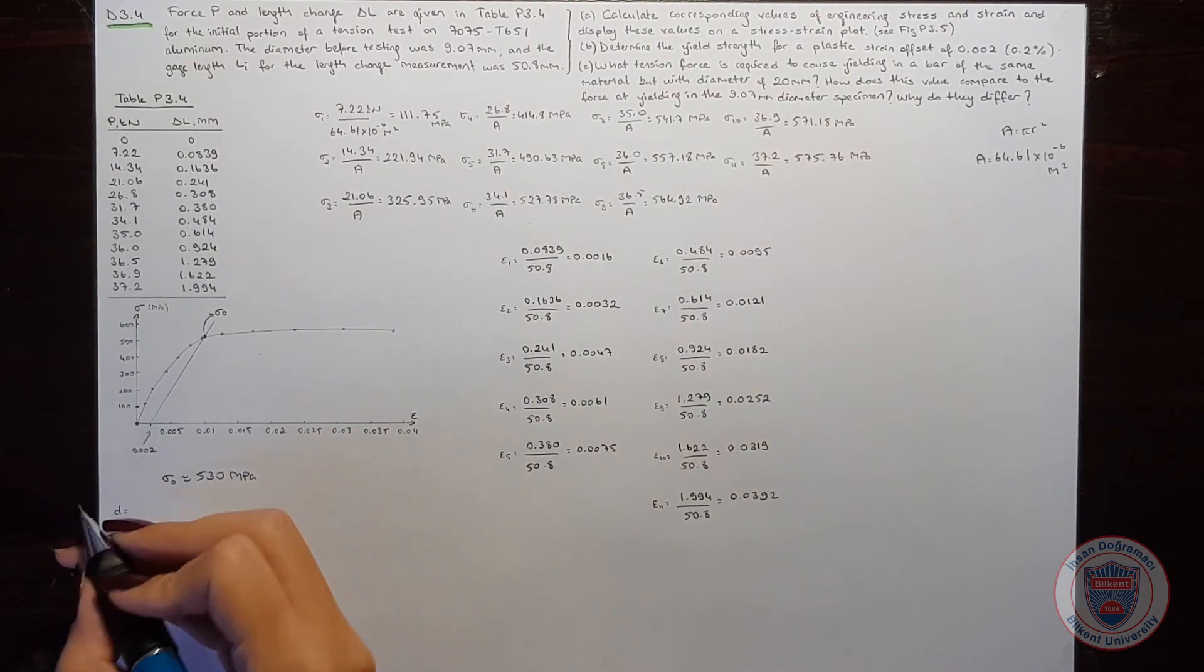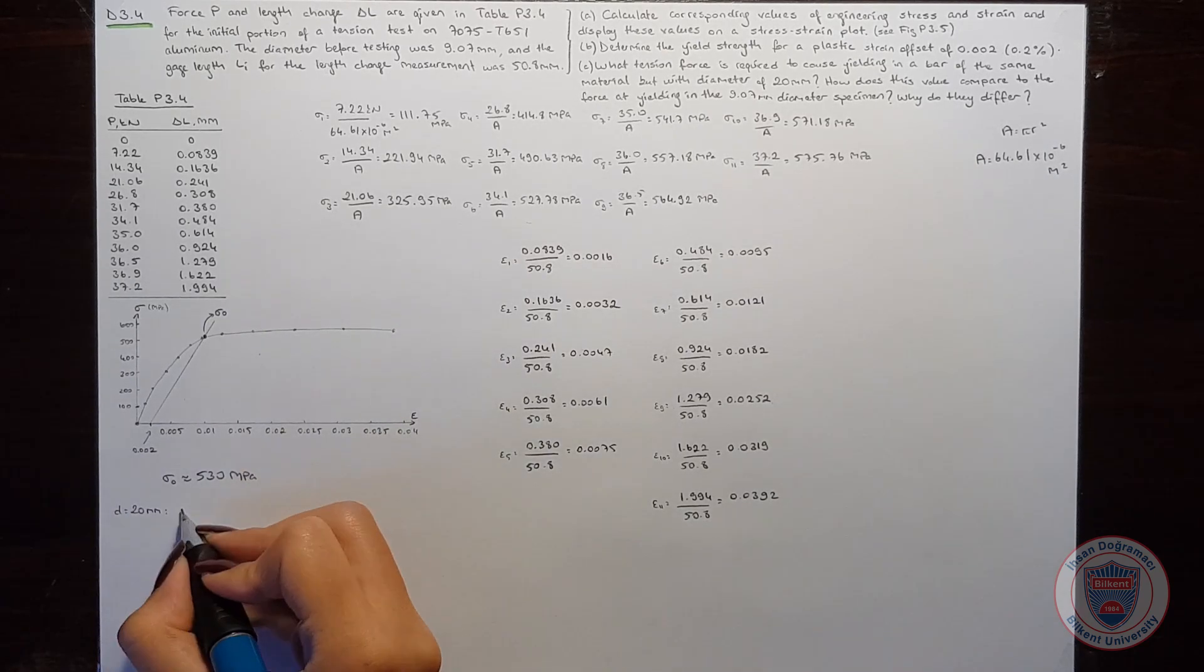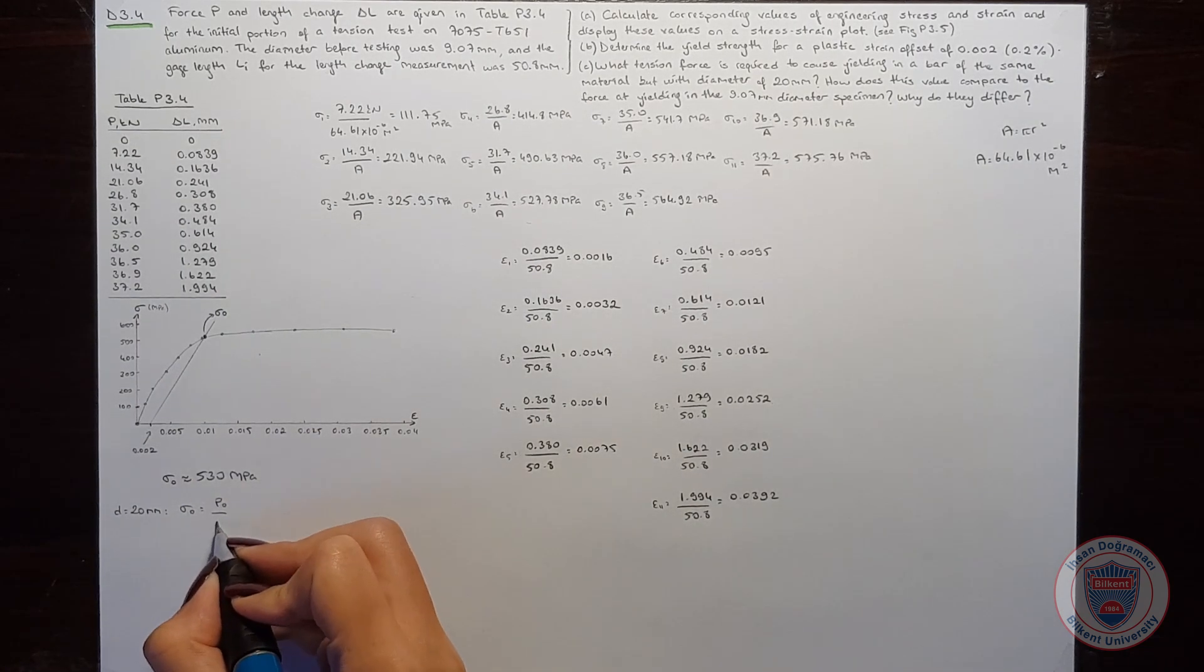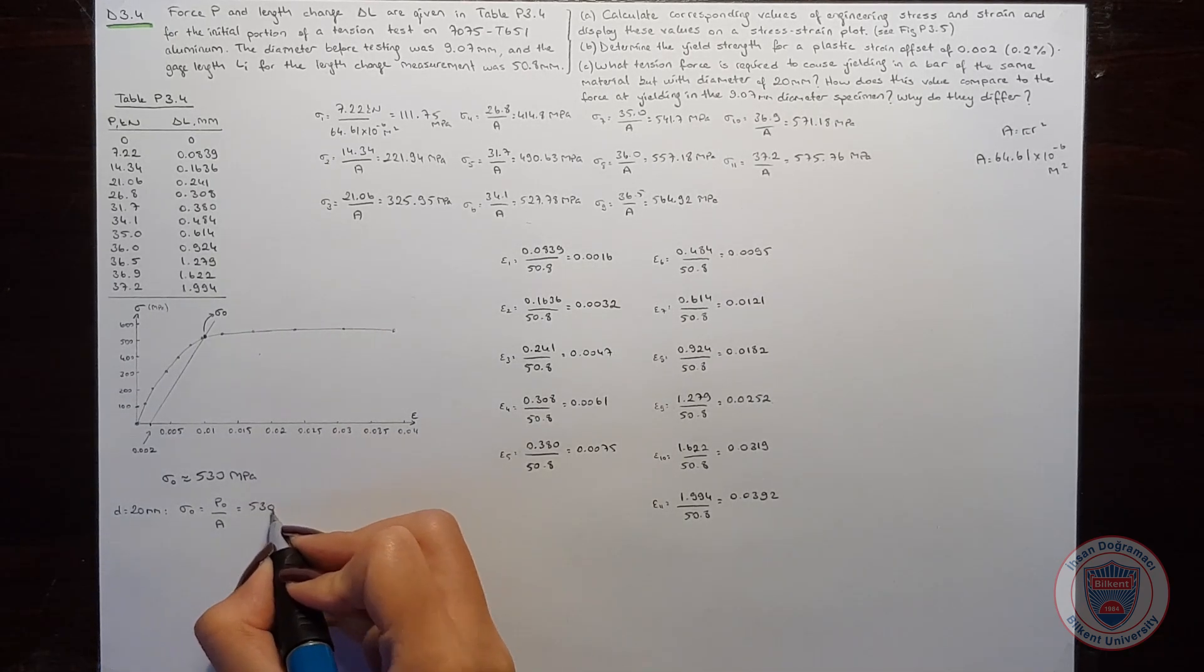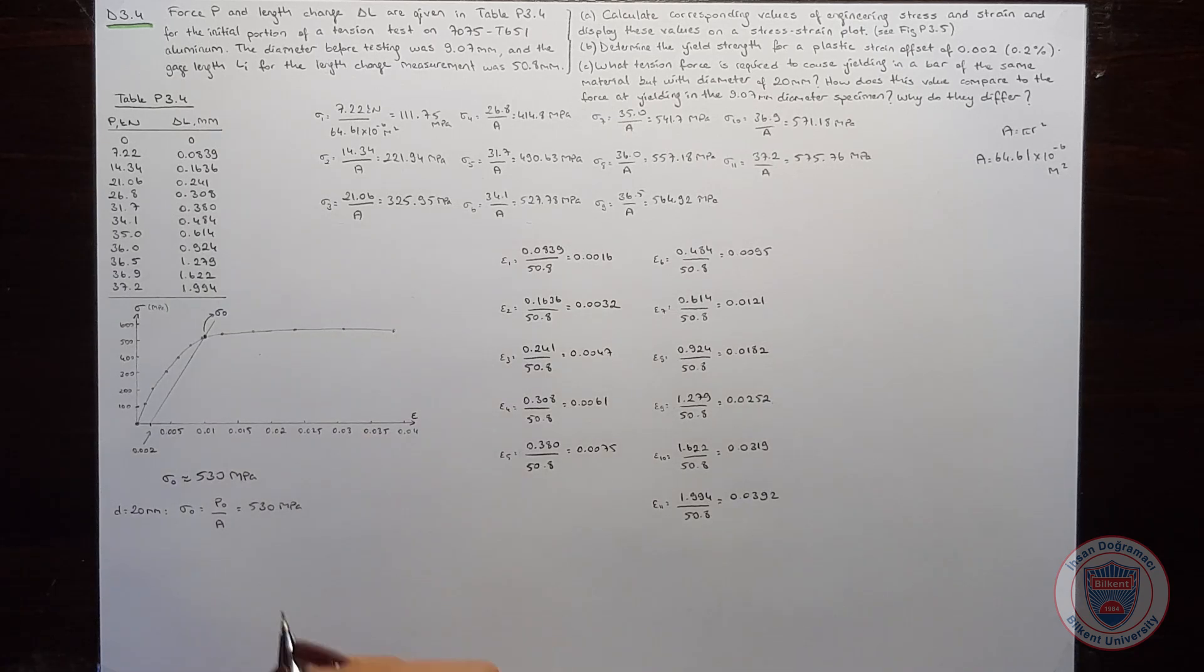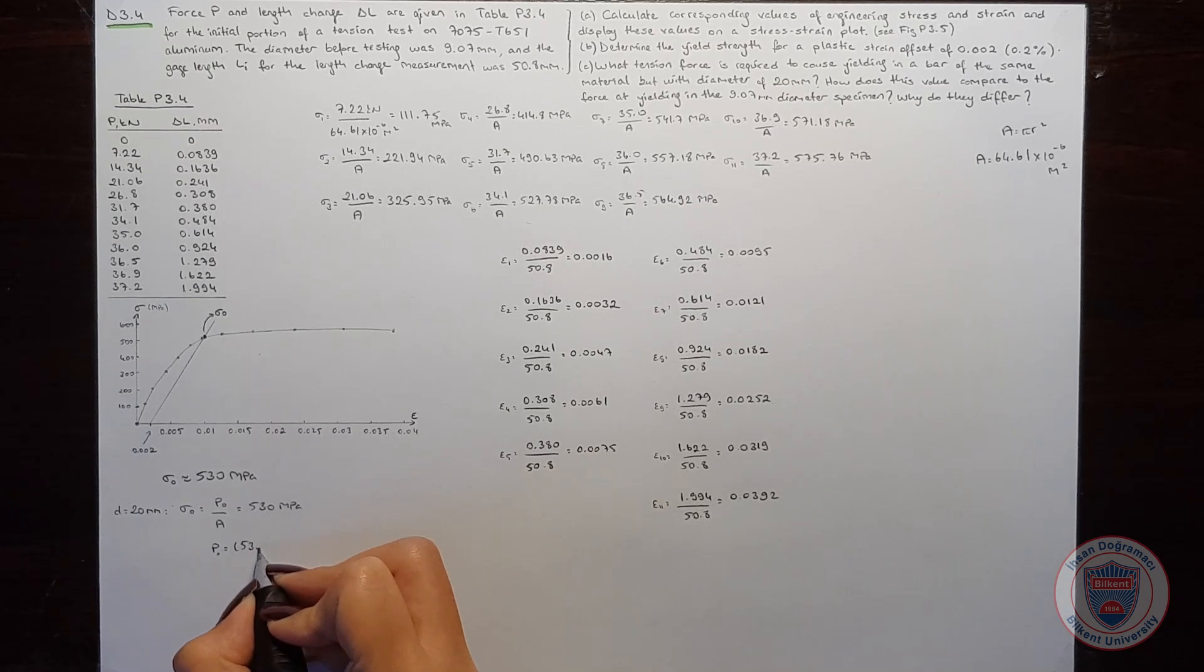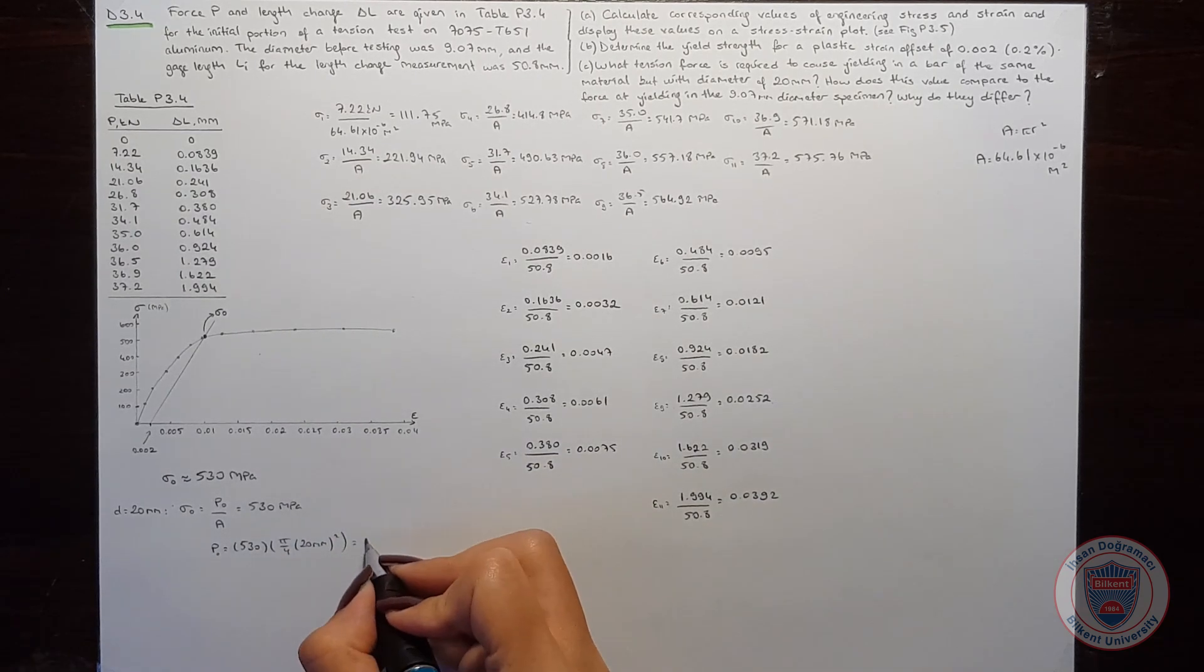When we move to part C, for diameter equal to 20 mm, the yield strength, which is equal to P₀ over A, becomes 530 MPa. And P in this case becomes 530 times pi over 4 times 20 mm squared. This will give 166.5 kN.